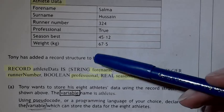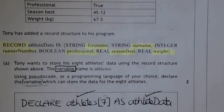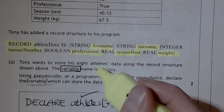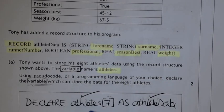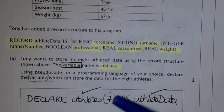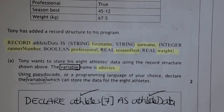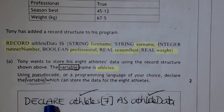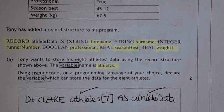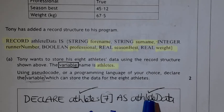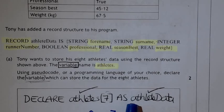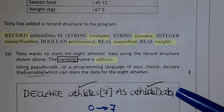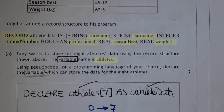So this is your basic structure for athlete data. Tony wants to store 8 athletes' data using the record structure shown above, in a variable called athletes. Just the same way as you declare a variable — it might be declare age as integer, or declare athlete name as string — you can actually declare it as the record type. So that's almost like a data type. What you've got here is declaring an array of records, starting from 0 up to 7, so that's 8 different records. We want to hold a number of pieces of information within each element, and that's when we use the actual record structure called athlete data. So that's how you declare that.